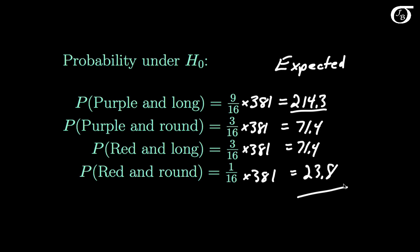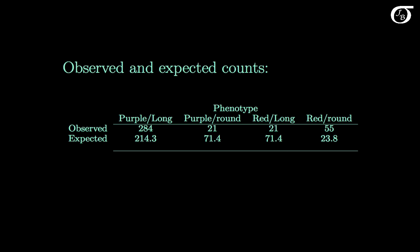These are our expected counts under the null hypothesis. Note that in chi-square tests you should typically carry many decimal places throughout the calculations. Here again are the observed counts from the sample and the expected counts under the null hypothesis. We actually saw 284 plants with purple flowers and long pollen grains, but expected only 214.3. For red flowers and round pollen grains we saw 55, but expected only 23.8. The differences seem quite large, but we'll carry out a formal test.